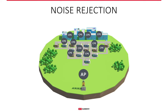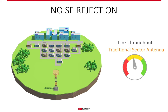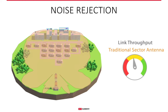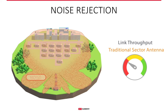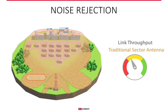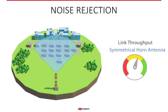While with the traditional sector antenna, the network performance is at the mercy of surrounding noise sources because its side lobes receive and transmit interference. Switching to horns provides high throughput and stability because they do not receive the noise at all.